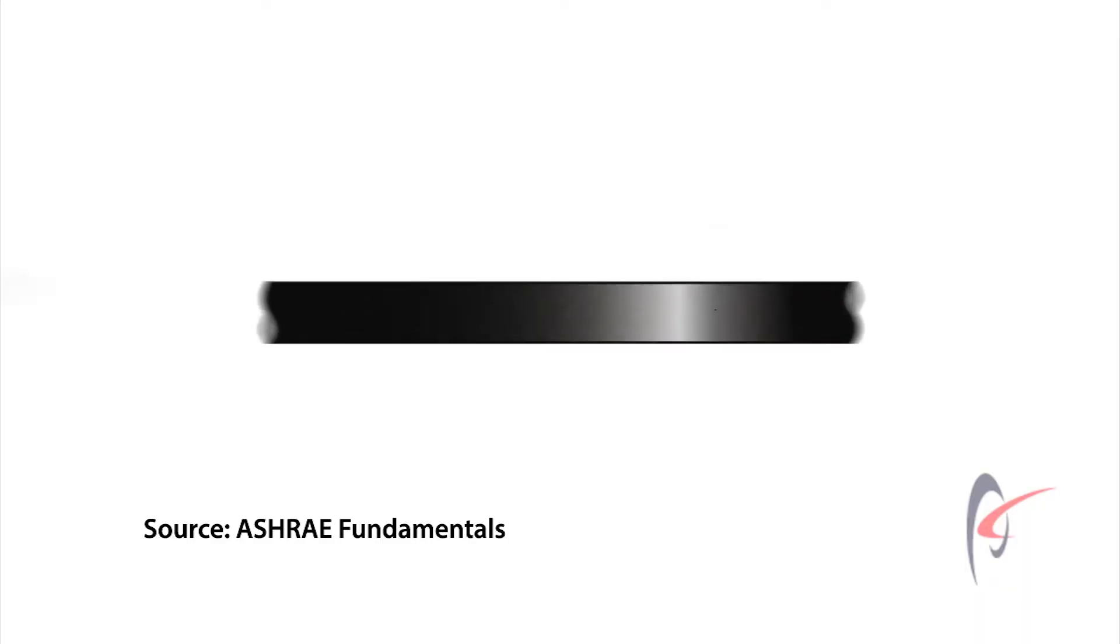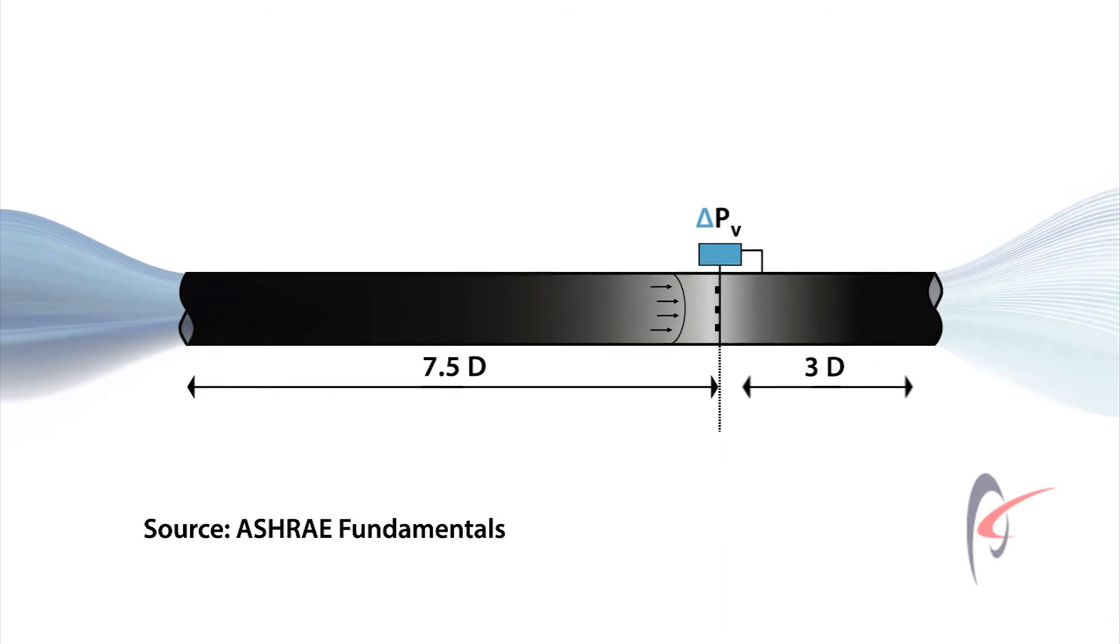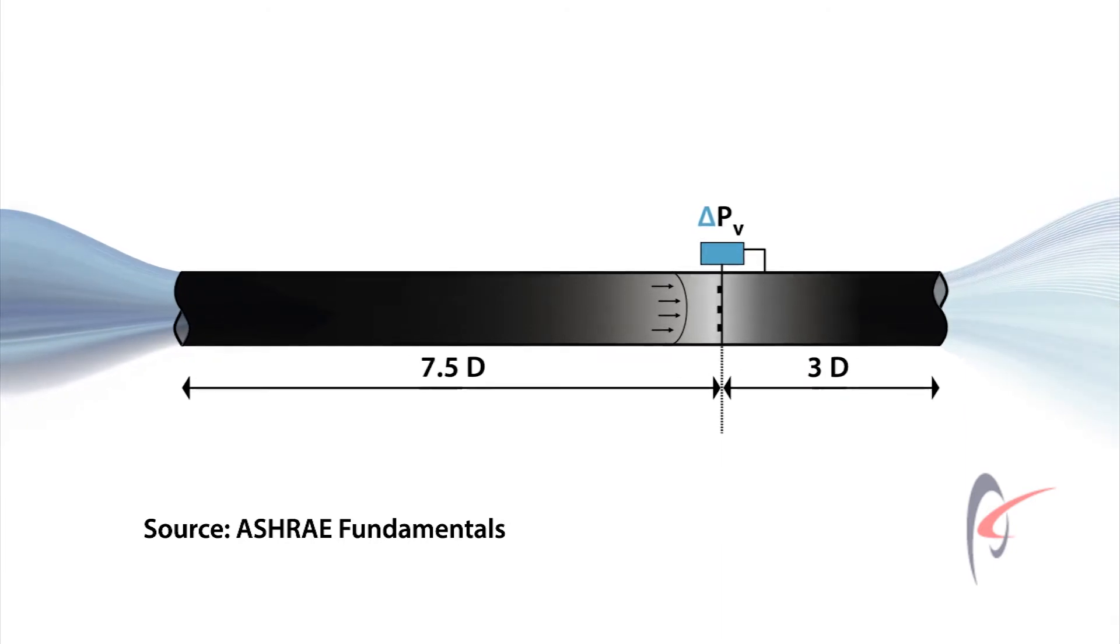With a VAV box, per ASHRAE design guidelines, they need 10 duct diameters of straight duct, seven and a half on the inlet side and three on the outlet side to get as accurate as they can possibly be. That's just not really obtainable in the built environment today.